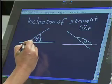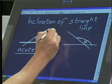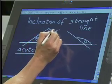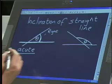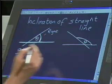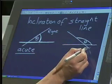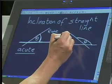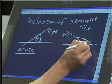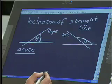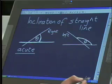Why would theta be acute? Because the line is directed up to the right. So when the line is directed up to the right, then we have an acute angle as the inclination. But when the line is directed down to the right or up to the left, then we have to take the obtuse angle as the inclination.